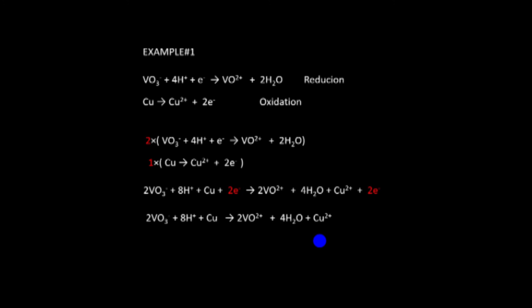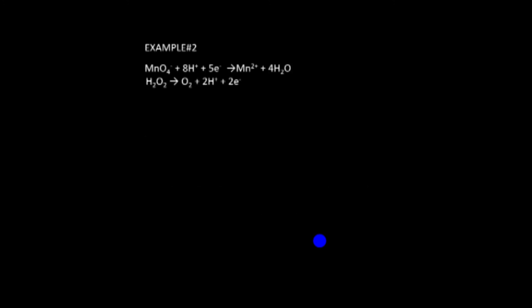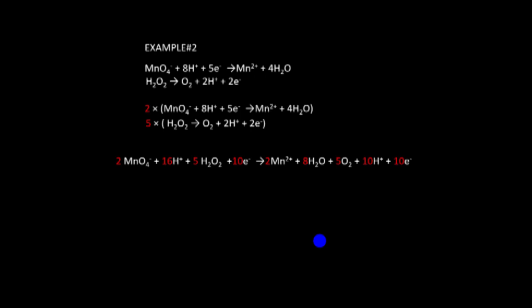In another example, five electrons are gained in the reduction half-reaction and two electrons are lost in the oxidation half-reaction. The LCM of 2 and 5 is 10. Multiply the first equation by two and the second by five to get 10 electrons on each side. Add the two equations: the 10 electrons cancel out. There are 16 H⁺ on the left and 10 H⁺ on the right, so subtract to get the overall balanced redox equation.